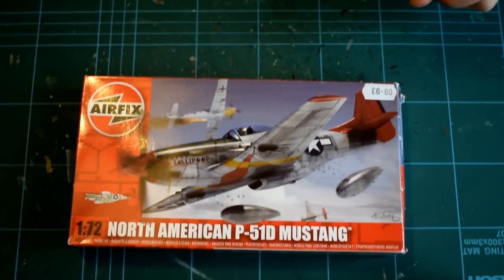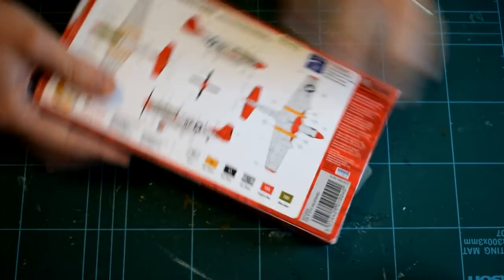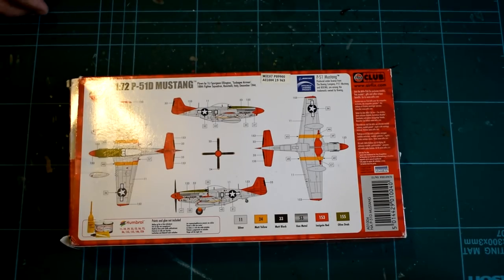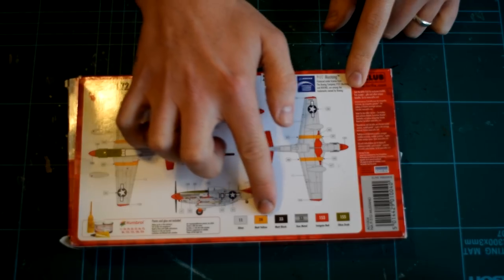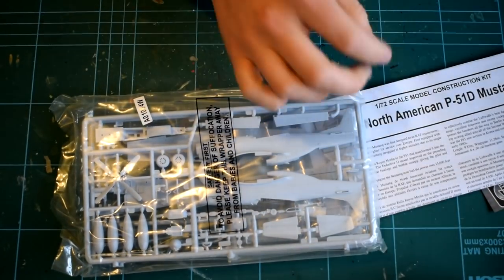An attractive image of the aircraft is featured on the front of the box, whilst the colour, painting and decal placement instructions are on the rear. Inside the box, there are the sprues, instructions and decals.